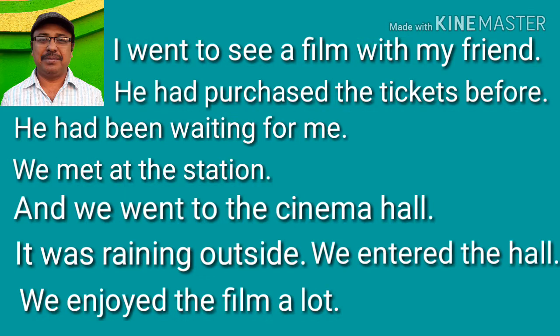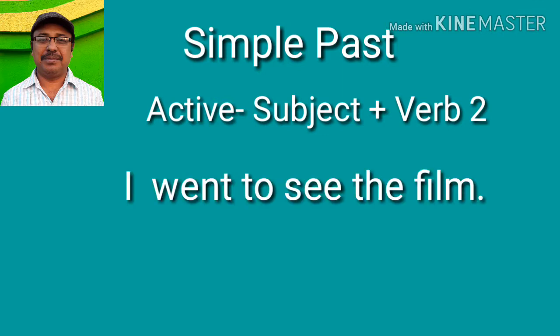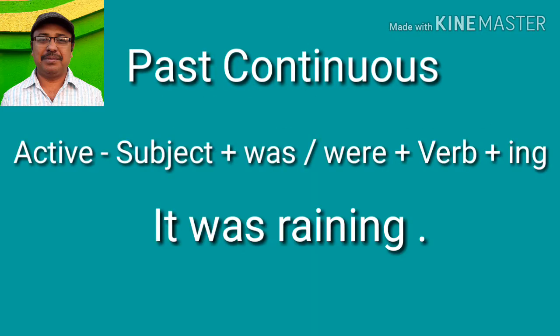Now, if we analyze these sentences, we can notice that there are four kinds of sentences. Simple past — for example, 'I went to see the film' or 'I met him.' Simple past means a single action in the past.